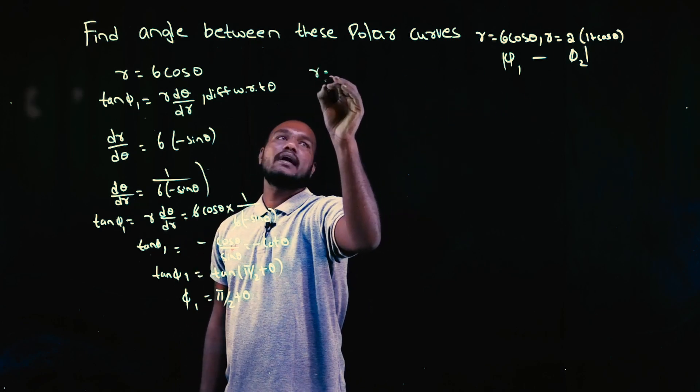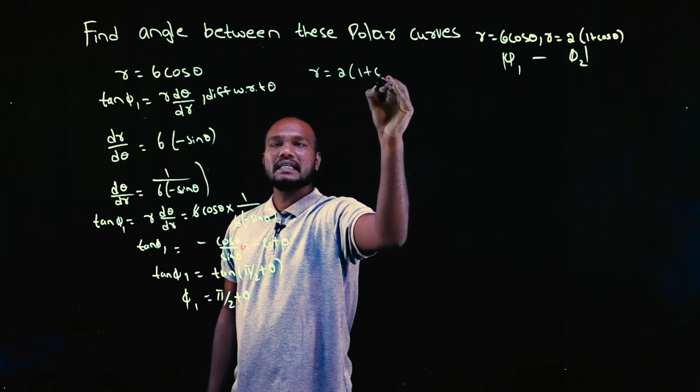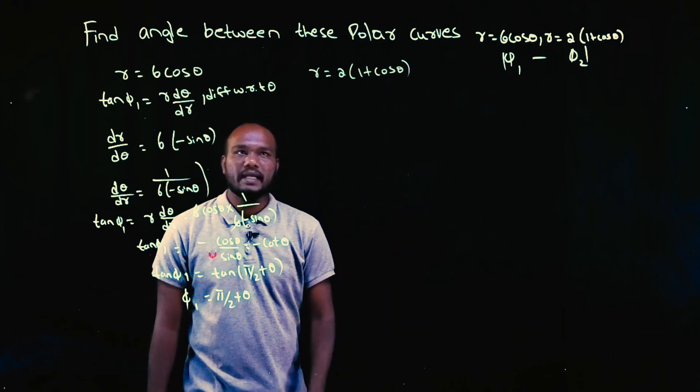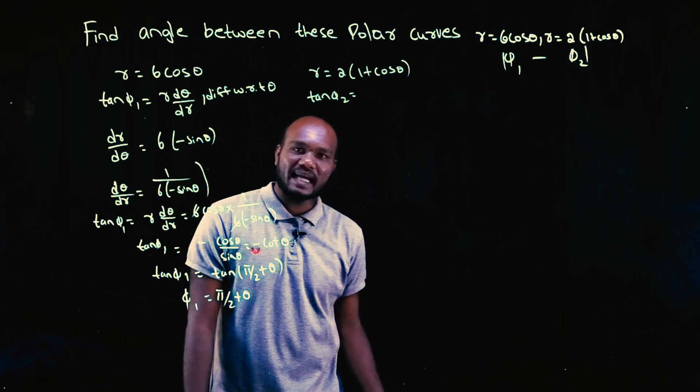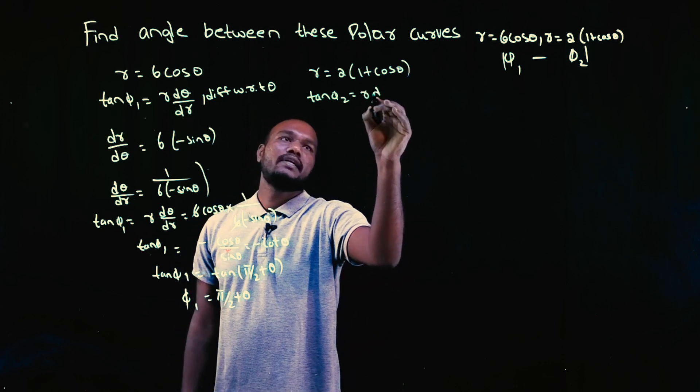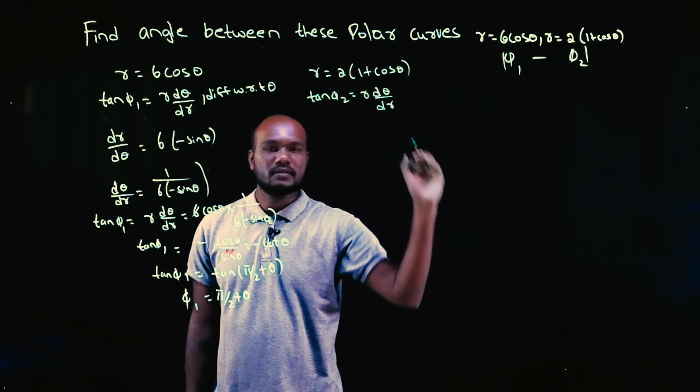Second one. R is equal to 2 into 1 plus cos θ. Let's solve this. Again, to find φ2 we need the value of tan φ2. What is tan φ2 value? R into dθ upon dr.